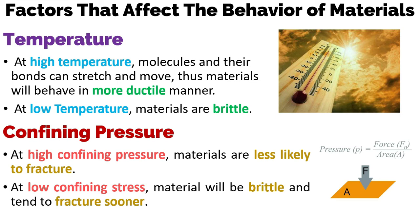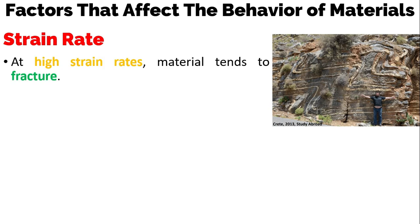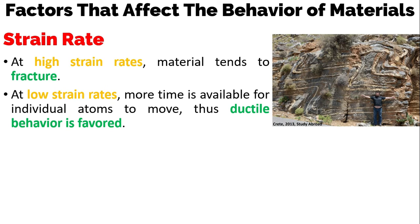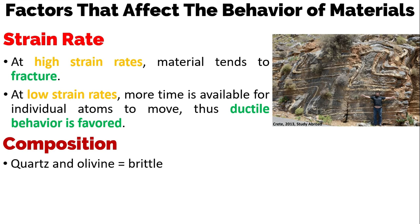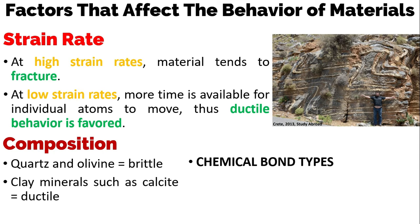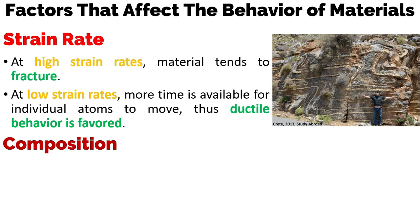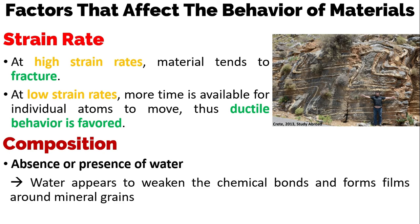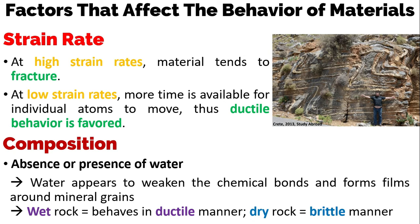At low confining pressure, materials will be brittle and tend to fracture sooner. Third, strain rate: at high strain rates, materials tend to fracture, while at low strain rates more time is available for individual atoms to move, so ductile behavior is favored. Lastly, composition: some minerals like quartz, olivine, and feldspar are very brittle, while others like clay minerals, micas, and calcite are more ductile due to chemical bond types. The presence of water also matters — water weakens chemical bonds and forms films around mineral grains, causing slippage, so wet rock tends to behave in a ductile manner while dry rocks tend to behave in a brittle manner.